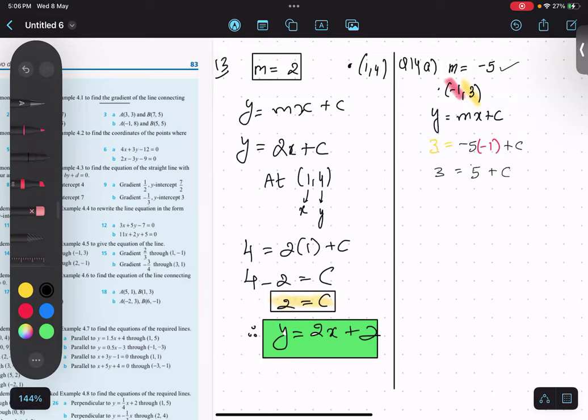I'll shift this five to the other side, so three minus five equals to c, minus two will be my c.